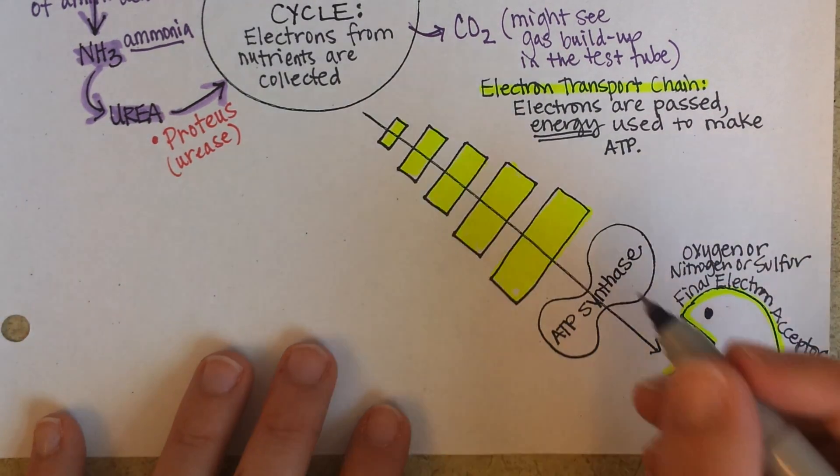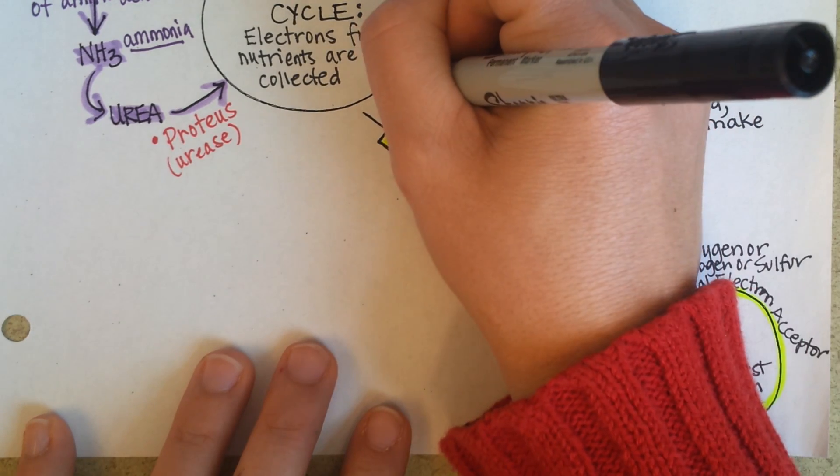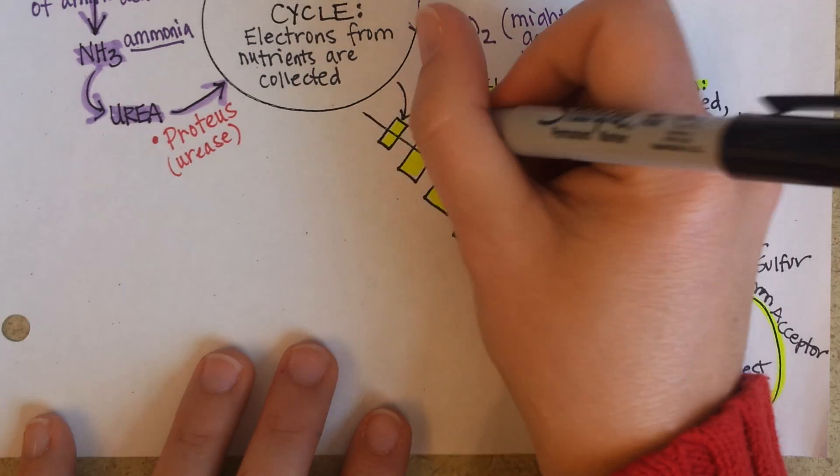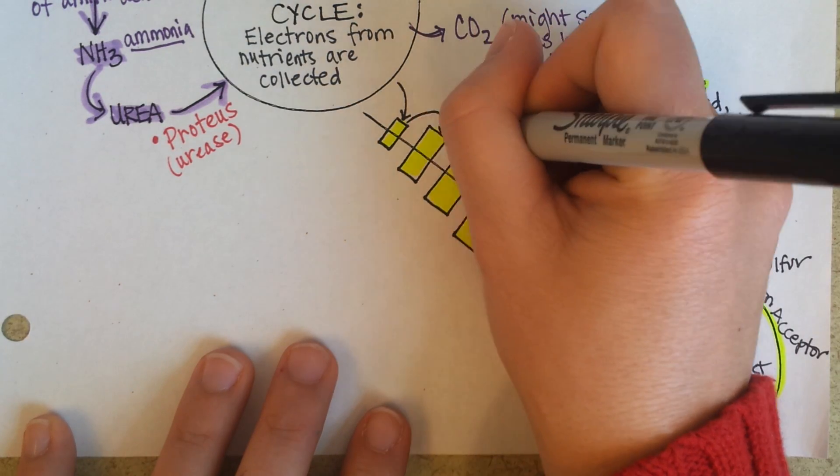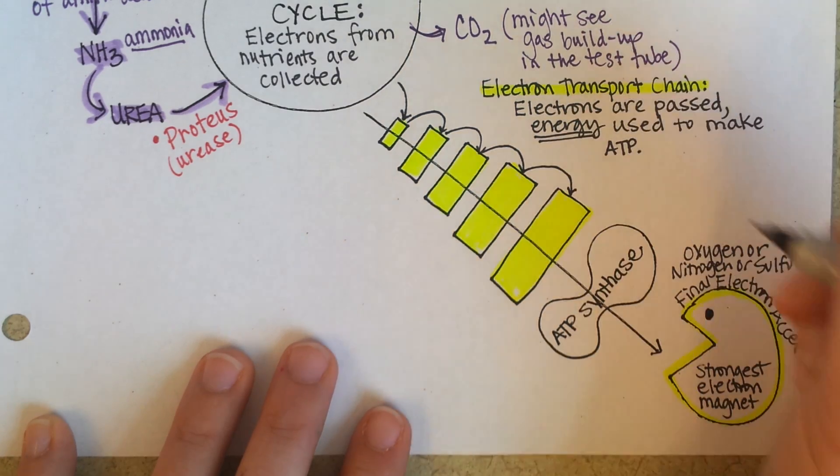So what happens is that each magnet is bigger than the one before, so the electrons are pulled to the first one and then the next magnet takes it and then the next magnet takes it and they start flowing down this chain.